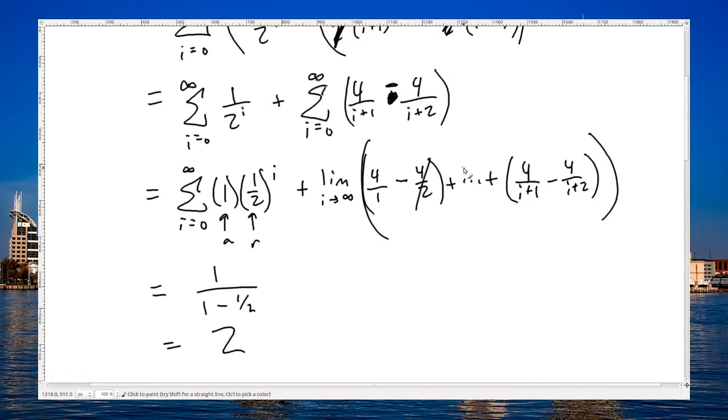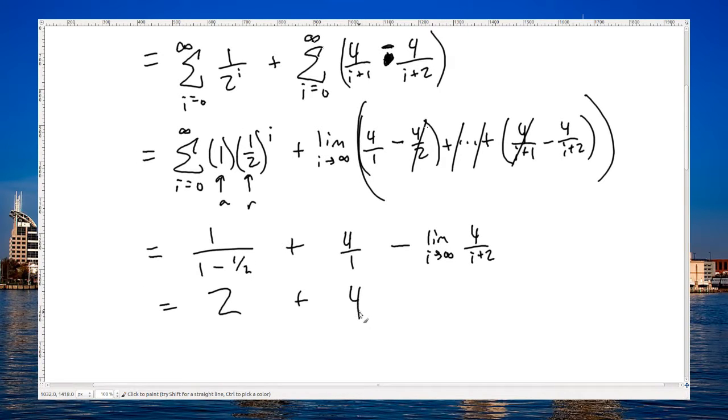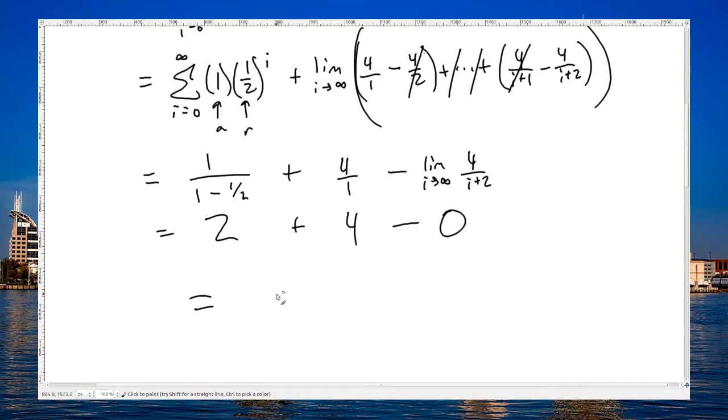So, we want the limit of all this, but it's all going to cancel. It's telescoping. 4 over 2, I'll get us a 4 over 2 minus 4 over 3, which will keep canceling. And so, what we have left is 4 over 1 minus the limit as i goes to infinity of 4 over i plus 2. And that is a big fat 0. Since the bottom's going out to infinity, that's going to limit to 0. And so, this convergent series has a value of 6.